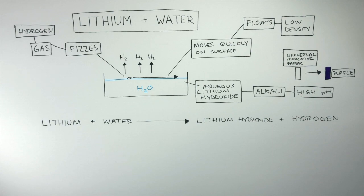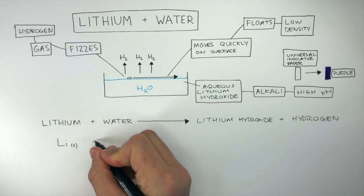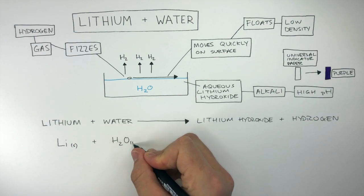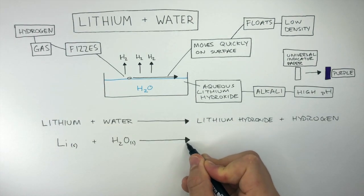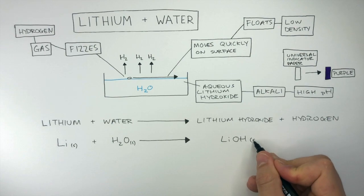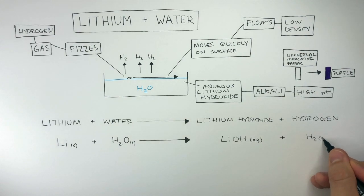The word equation for this chemical reaction is lithium + water → lithium hydroxide + hydrogen. The aqueous lithium hydroxide formed is just lithium hydroxide dissolved in water. It is alkali as it has a high pH and causes universal indicator paper to turn purple. This is the case for all metal hydroxides. The symbol equation is Li(s) + H₂O(l) → LiOH(aq) + H₂(g).